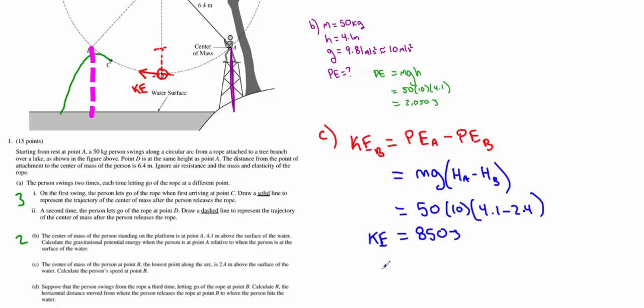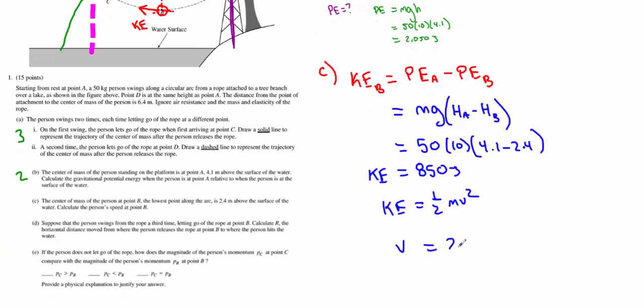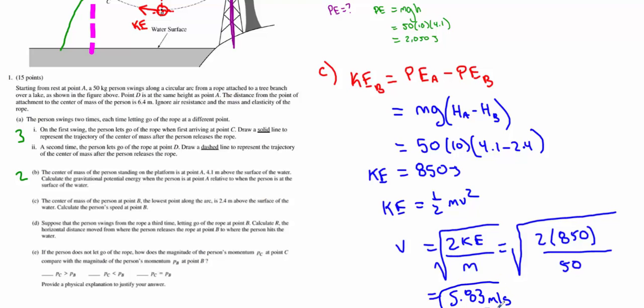However, I can find my final speed. I recognize that kinetic energy is equal to one-half mv squared. So, the speed at that spot is going to be the square root of 2 times my kinetic energy divided by m. So, it's the square root of 2 times 850 joules divided by the mass of the student, 50 kilograms. And you get a velocity of 5.83 meters per second. Part C here was worth a total of 3 points.